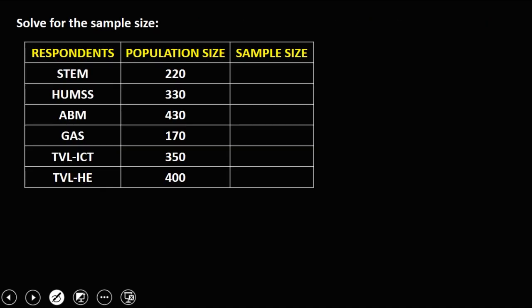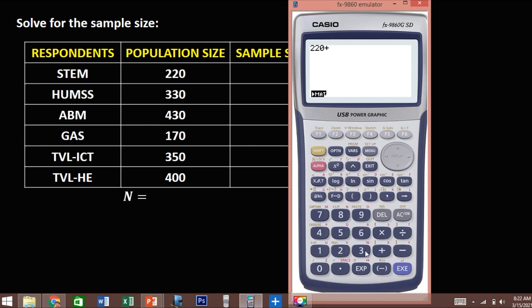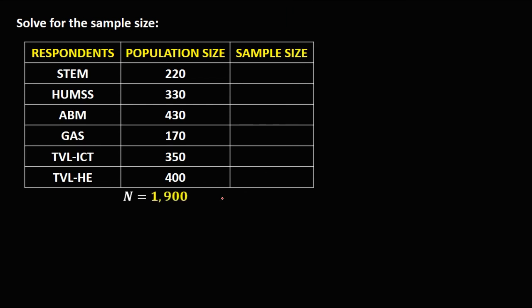For this next problem, we solve for the sample size for every respondent group: STEM, HUMS, ABM, GAS, ICT, and HE. First, we need to compute the total population size by adding all population sizes for every respondent: 220 plus 330 plus 430 plus 430 plus 170 plus 350 plus 400. The total population size is 1900.